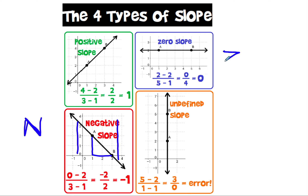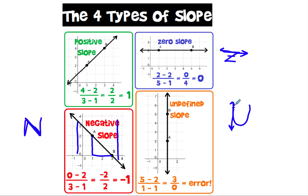Zero slope is flat like the floor. You can also think of it as the top or bottom part of the letter Z — very flat, no slope at all. Undefined slope means the line goes straight up and down. Think of U for up, or the side of the letter U forming a vertical line. If you try subtraction, you'd get zero on the bottom, and you can't divide by zero — that's what makes it undefined.